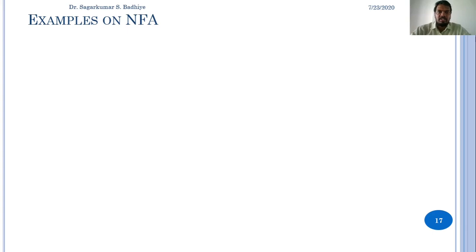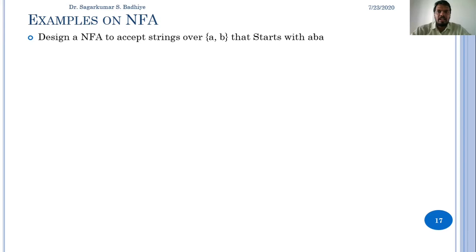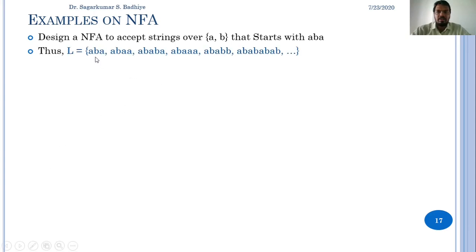Let us begin with the first example: design a non-deterministic finite automata that accepts strings over A and B which starts with ABA. The language accepted will include ABA, ABABA, ABAAA, and so on — strings that start with ABA and later can have any combination of A and B.